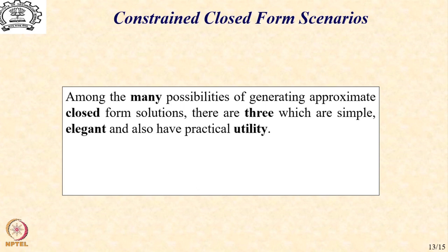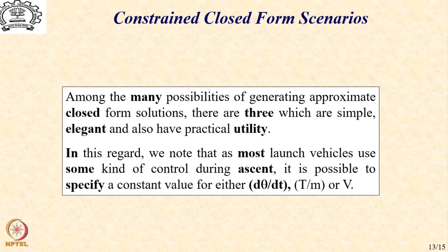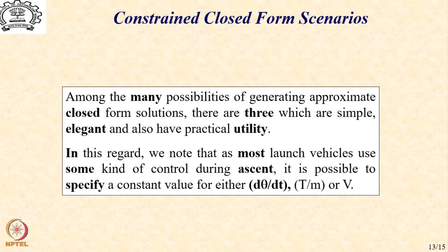There are many possibilities for generating closed-form solutions, but among them three are simple, elegant, and have practical utility. Most launch vehicles use some kind of control mechanism during the ascent mission, so it is possible to assume a control that maintains one of three variables as constant: either d(theta)/dt, T/m, or v. By keeping one of these constant, it is possible to arrive at closed-form solutions with significant practical utility.